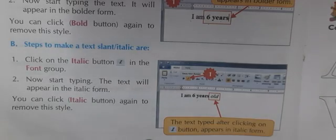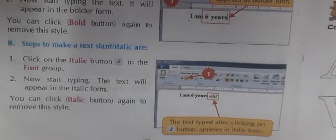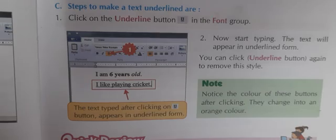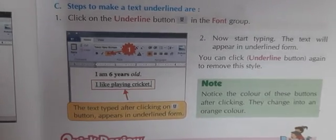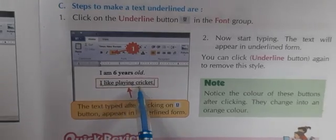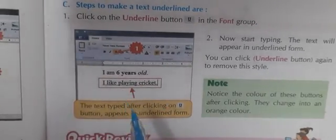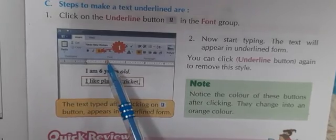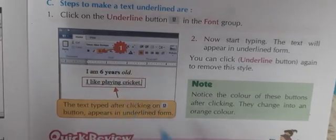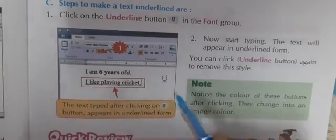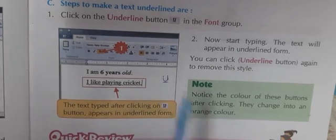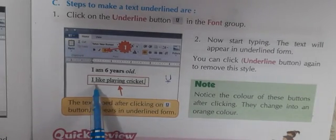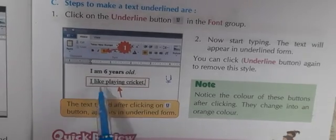If you want to remove italic style, click on I again and the style will be removed. Now in the last we will learn how we can make the text underlined. As we are writing in our notebook, if you want to show that some text is important, we underline it. Underline means a line below the text or words to show it's important. To underline the text, first go to the Home tab, then in the font group we will select the U option. U means underline. When we select the underline option, the text will be underlined — there will be a line below the text.